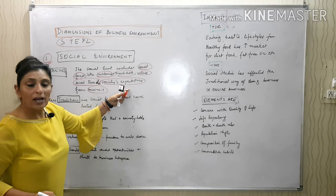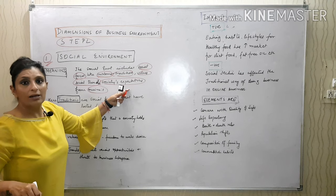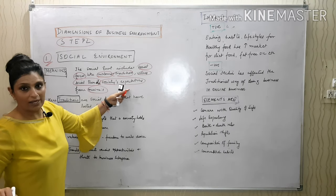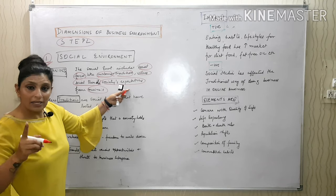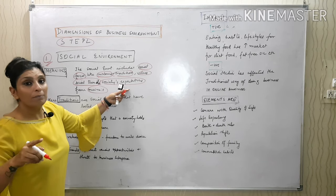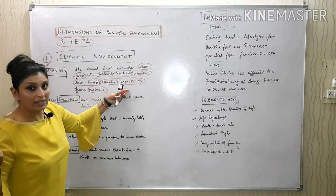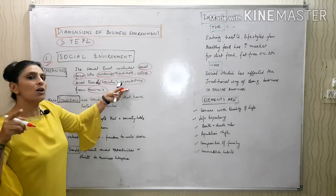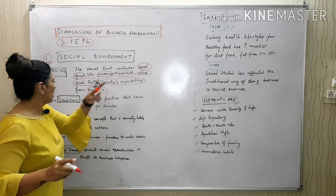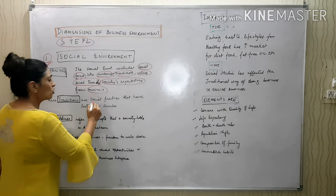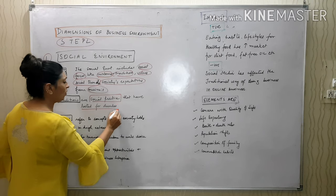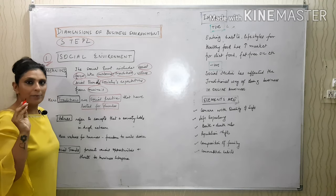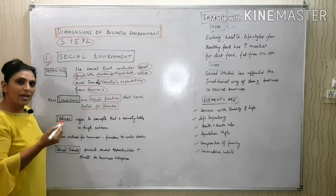Society expects business to work in the interest of all stakeholders and take care of the environment. That's why polythene bags have been banned — because they were affecting the environment. Here, traditions are social practices that have lasted for decades. Whenever a tradition has been going on for years, it affects business. For example, at the time of Diwali, Eid, Gurpurab — the business of sweets, stationery, confectionery items, and gift items increases.